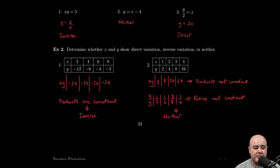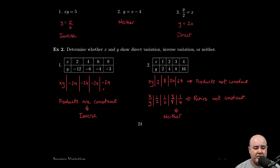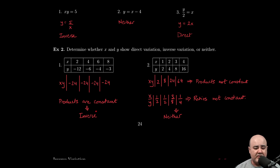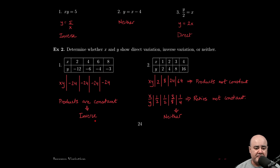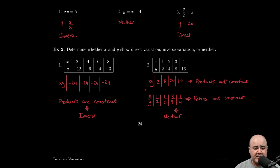You want to make sure that you do that computation for all the data points that are given to you, and you'll see why in the very next example. So here, since these products are the same, the products are all negative 24, that indicates to us or implies that we have inverse variation. Or we can say that x and y vary inversely.